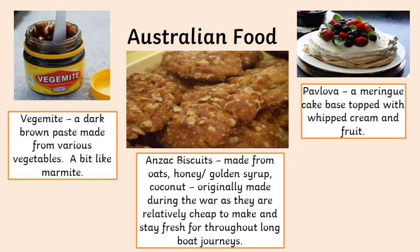Let's have a quick look at some Australian foods. On screen you have Vegemite — a dark brown paste similar to Marmite; you either love it or hate it, and apparently most British people hate it. Then there are Anzac biscuits, made from oats and honey or golden syrup and coconut. They were originally made during wartime — wives and mothers would make them because they were cheap and stayed fresh for long periods on boat trips. Then you've got pavlova, a meringue cake base topped with whipped cream and fruit.